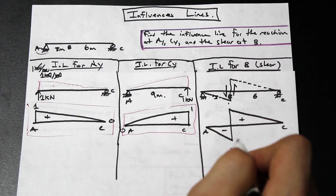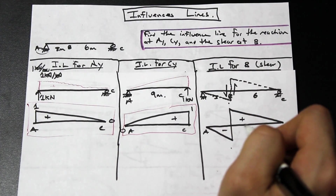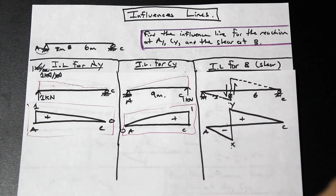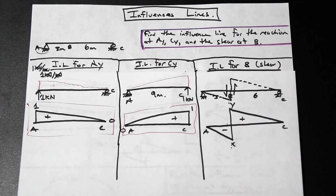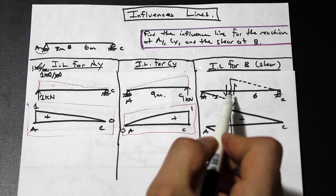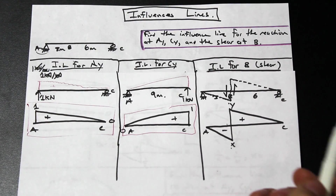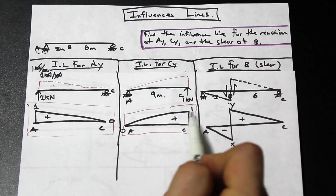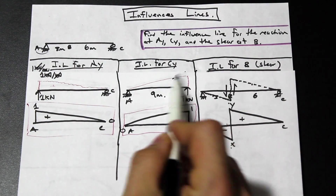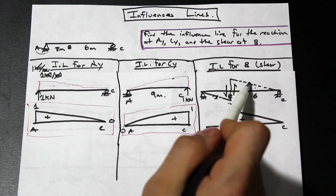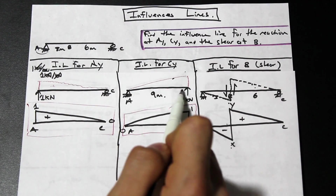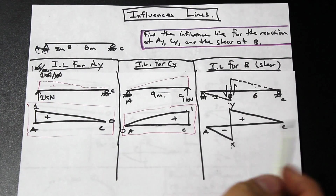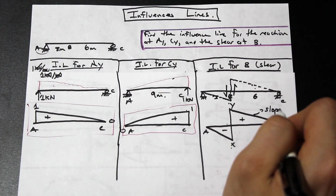This influence line is a little different because we don't know the peak values — B is not at the center, it's three meters from A. So I'll call those unknown values Y and X. Since we always apply a unit one kilonewton force, the sum of the two shear forces must equal one, meaning the slopes of the two lines are equal. The slope is one over nine — one rise over a nine-meter run.